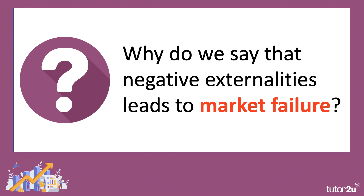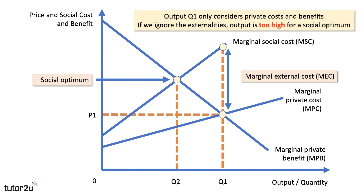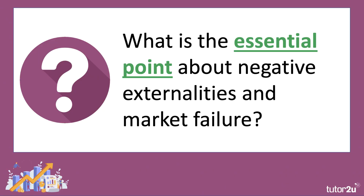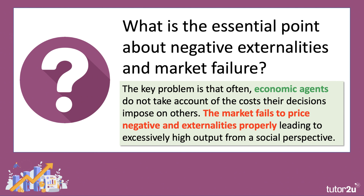So why do we say that negative externalities lead to market failure? Because the market price is not reflecting the externalities. Output Q1 only considers the internal private costs and benefits. If we ignore the externality, output is too high for a social optimum, and this means there is overproduction in the market. The gap between Q1 and Q2 is market failure. The key problem is that economic agents — producers and consumers — do not take account of the external costs that their decisions impose on others. Therefore, the free market fails to price negative externalities properly, leading to excessively high output from a social perspective.